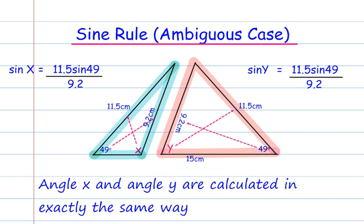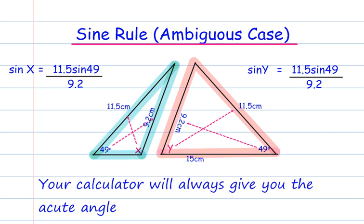That's because angle X and angle Y are calculated in exactly the same way. Your calculator will always give you the acute angle. Even though you can find either angle using the same calculation, your calculator will give you Y. It doesn't know which one you're looking for, so it will always give you the acute angle.